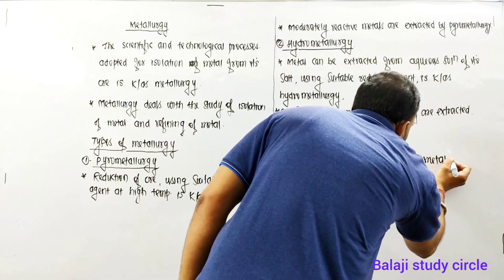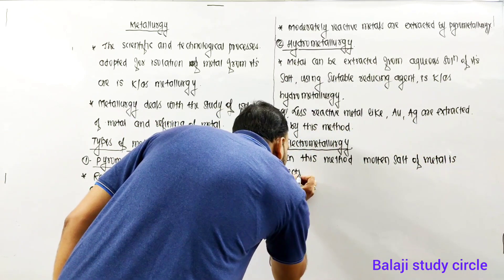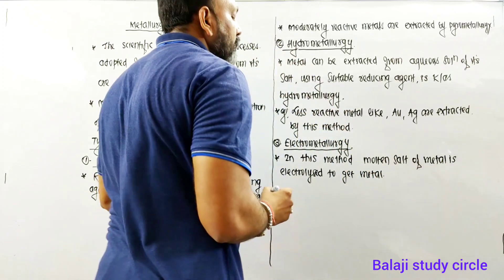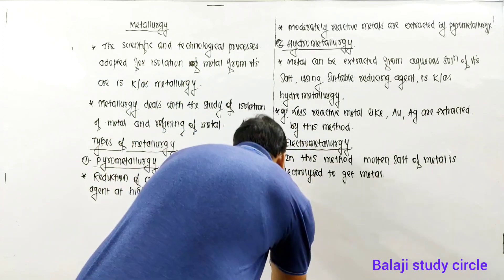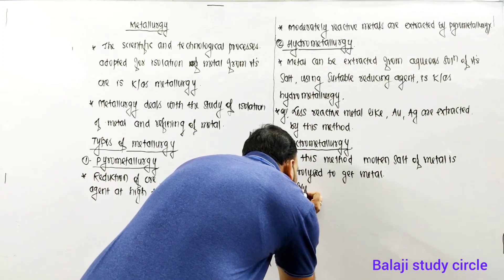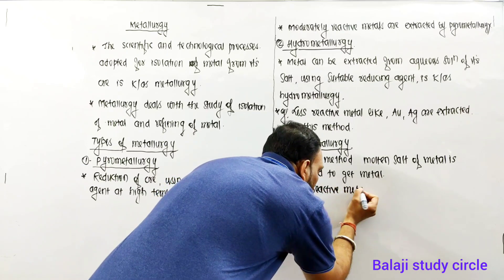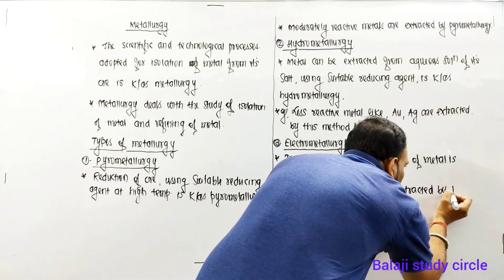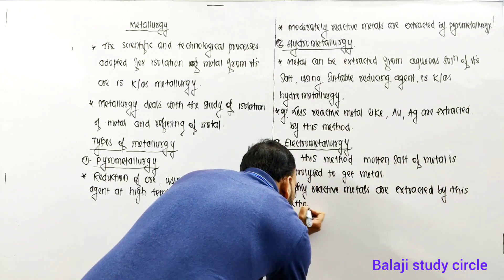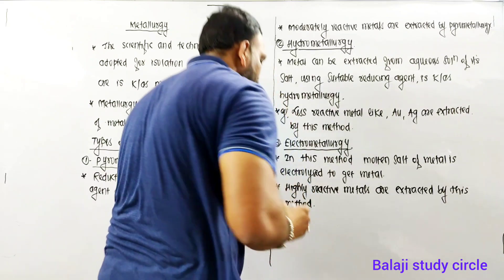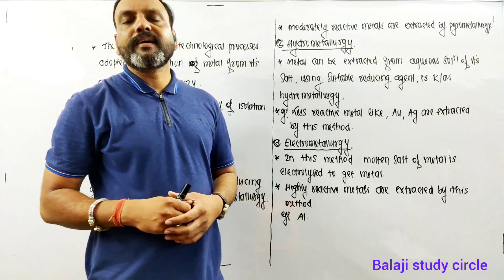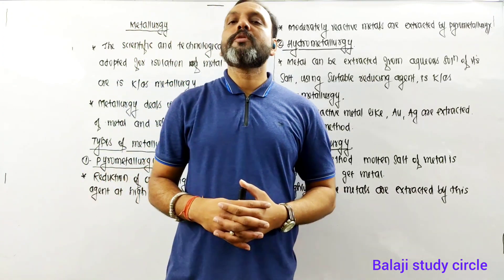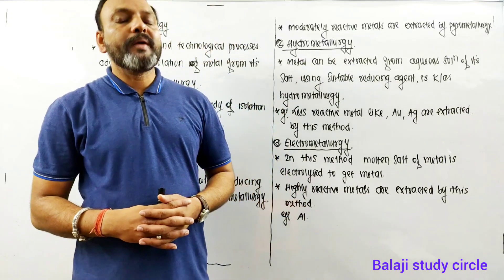In this method, the molten salt of the metal is electrolyzed to get the metal. Highly reactive metals are extracted by this method. For example, aluminum — whose ore is bauxite — is extracted by electrolysis of its molten salt. So that was all about metallurgy and its types.